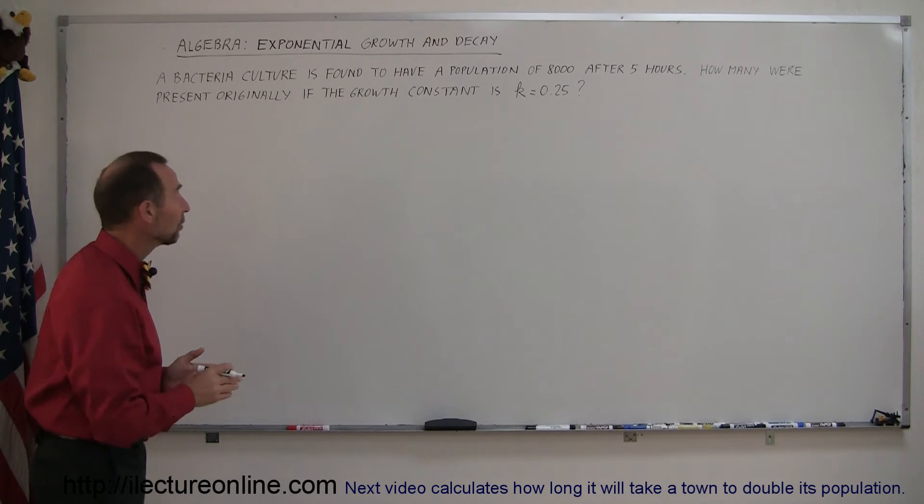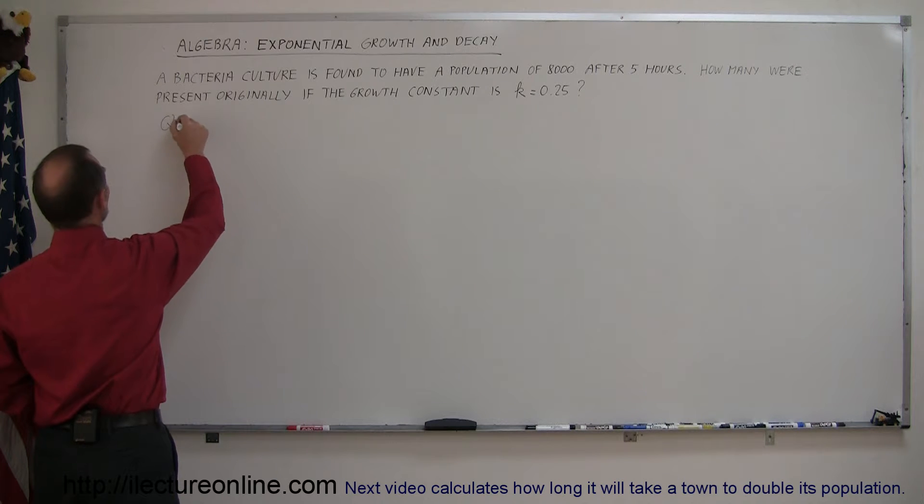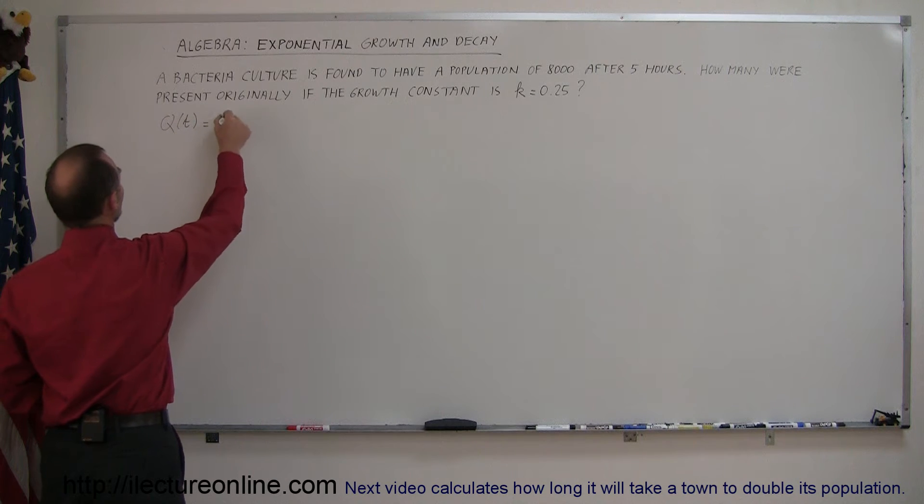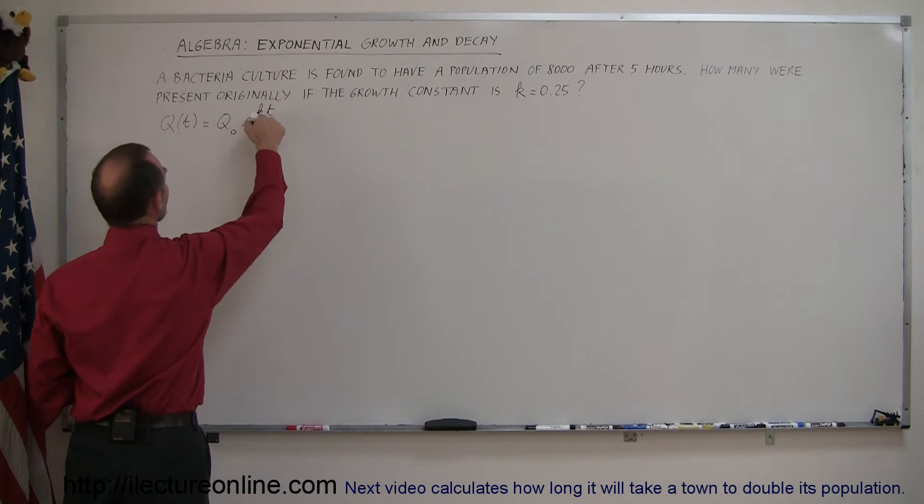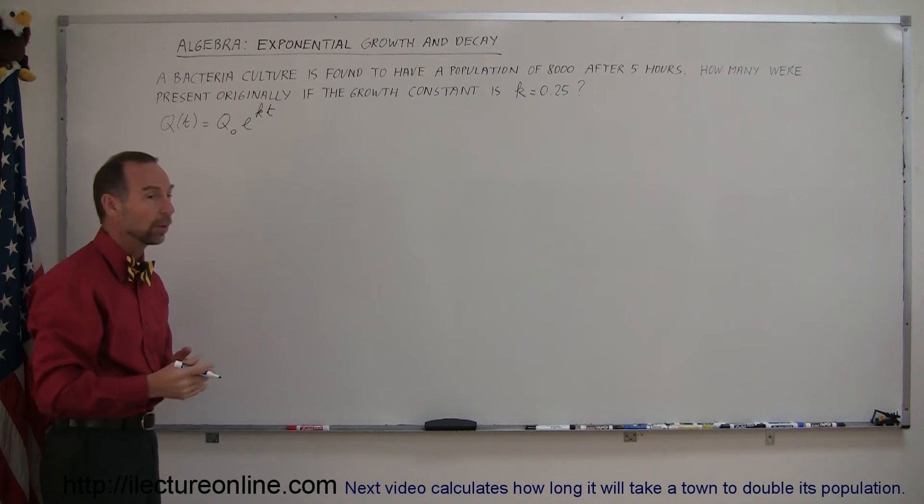So remember the equation that we need to use here is that the quantity, which is a function of time, is equal to the original quantity times e to a positive kt. Positive k means that it's a growing quantity.